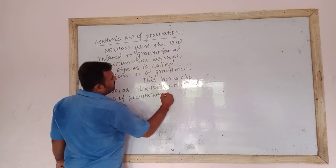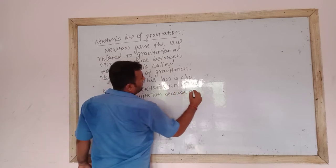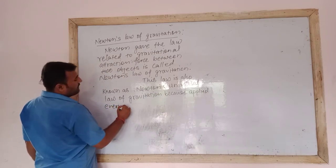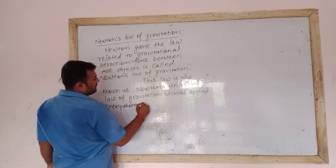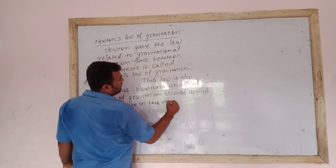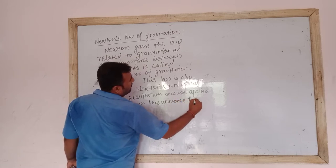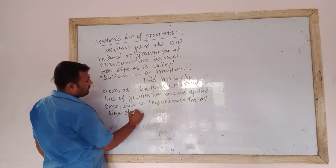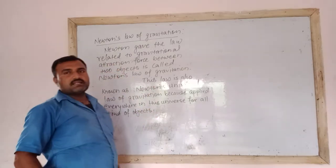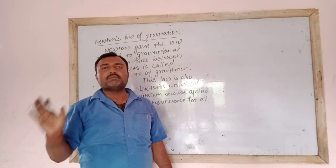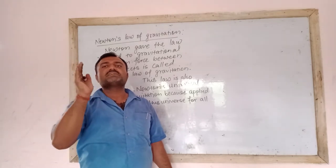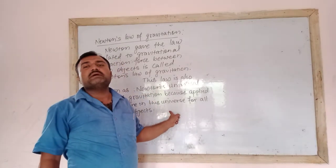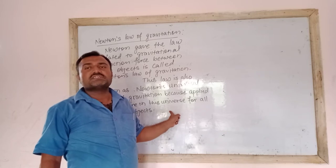This law applies everywhere in this universe, for all kinds of objects. It means for any part of the universe that law is applicable, and for all objects — objects may be tiny or large, it does not matter. Newton's Law of Gravitation is applied to calculate how much attraction force exists between objects.